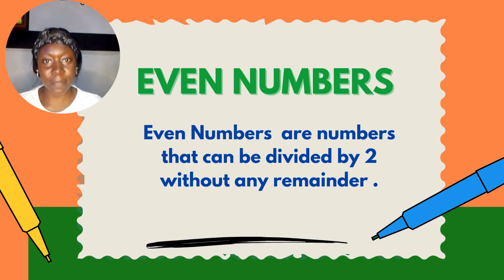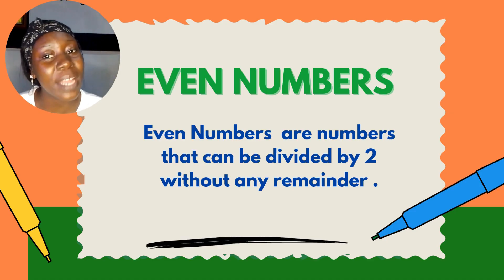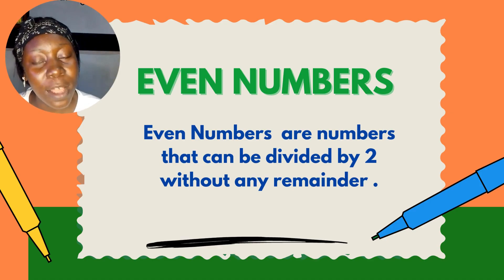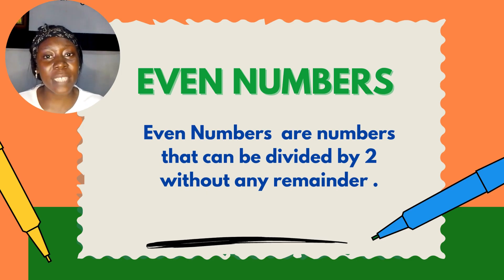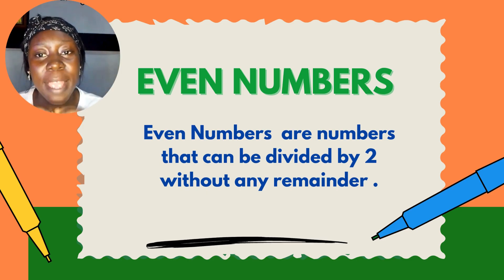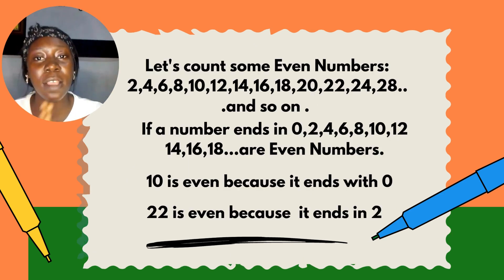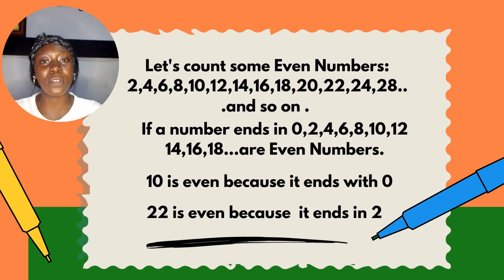We have even numbers. Even numbers are numbers that can be divided by two without any remainder. So let's know our even numbers. Let's count some even numbers together.